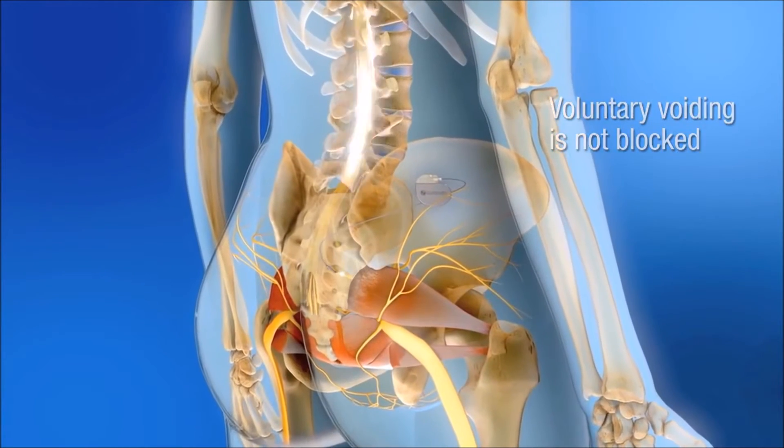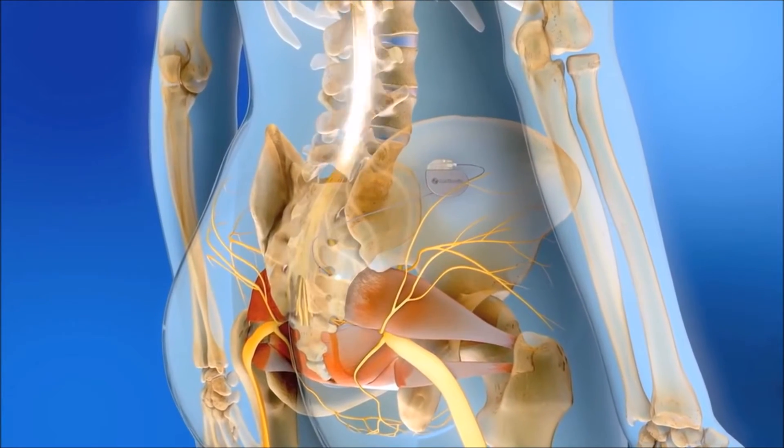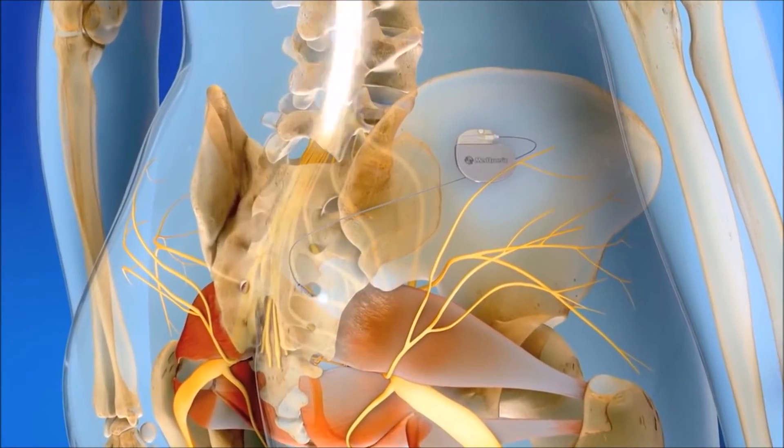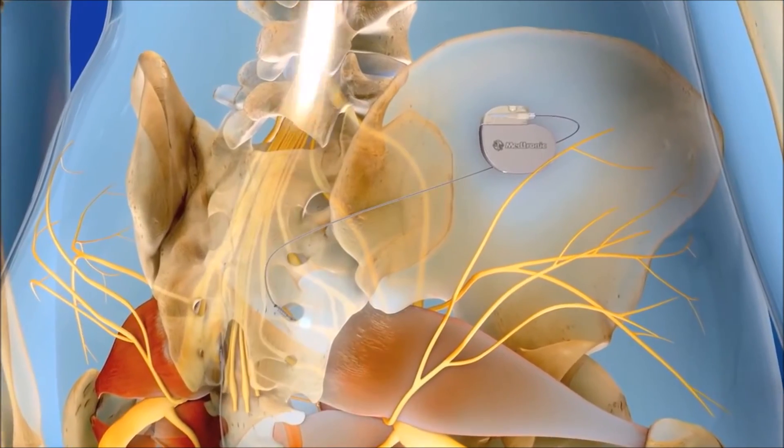Unlike other therapies that target the bladder, bladder regulation via sacral neuromodulation occurs without physically influencing the bladder or sphincter muscles.